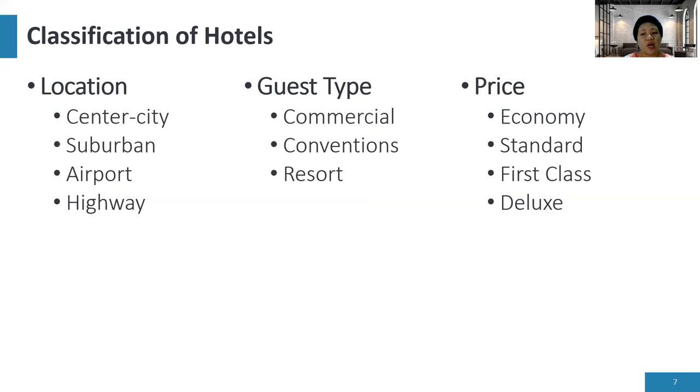For classification by price, it could be economy at the cheapest end, then standard, first class, and deluxe as the most expensive.